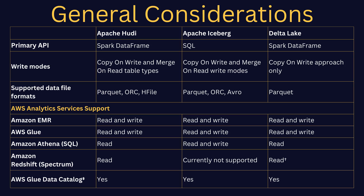The first thing we're going to look at is general considerations when you're trying to pick an open table format for your transactional data lake. Looking at the table on screen, both Apache Hudi and Delta Lake use the Spark DataFrame. So if you're more familiar with Java, Python, Scala, or PySpark, you may want to side with these formats.